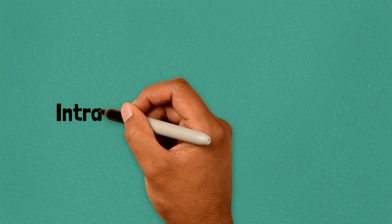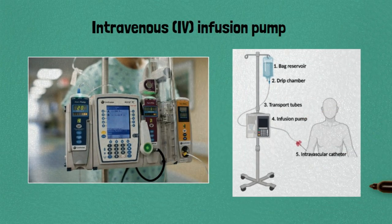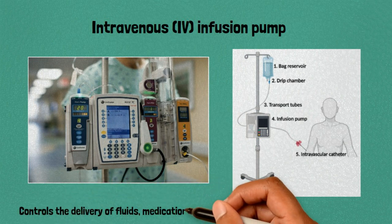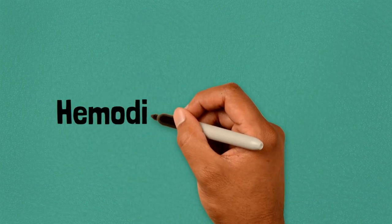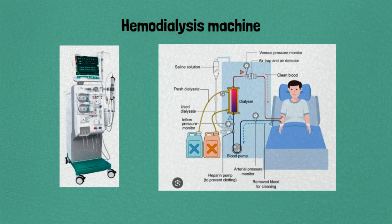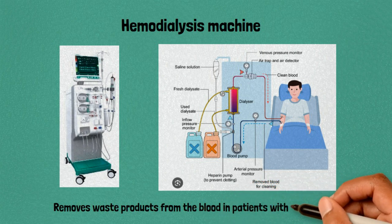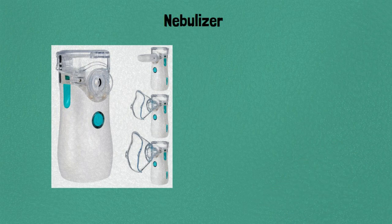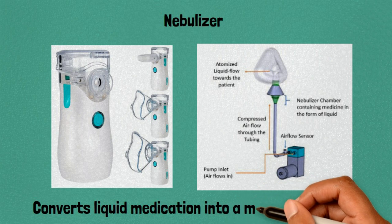Sixteen: intravenous infusion pump, controls the delivery of fluids, medications, and nutrients into a patient's bloodstream. Seventeen: hemodialysis machine, removes waste products from the blood in patients with kidney failure. Eighteen: nebulizer, converts liquid medication into a mist for inhalation.